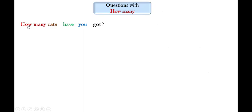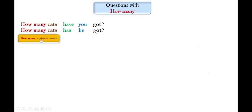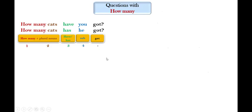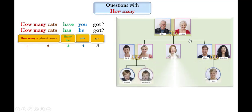Let's study questions with 'how many.' For example: 'How many cats have you got?' 'How many cats has he got?' We start with 'how many,' after that plural nouns — always plural after 'how many' — then 'have' or 'has,' then the subject, then 'got.' Here is our family tree: Ben and Mary, Jenny, Chris, Kim, Tom, Jess, James, Scott, Ann.